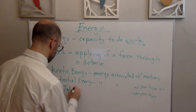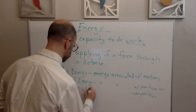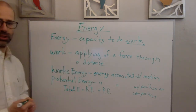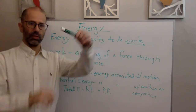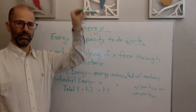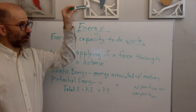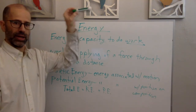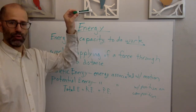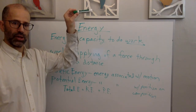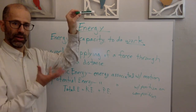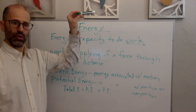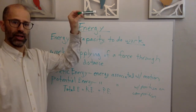The total energy is equal to kinetic energy plus potential energy. For example, if I hold this marker up at a certain height, due to its position from the ground it has a certain amount of potential energy. Right now it's not moving, so there's no kinetic energy, but it has potential energy.